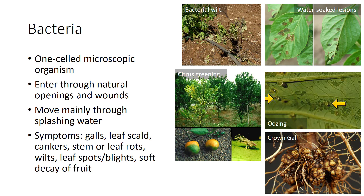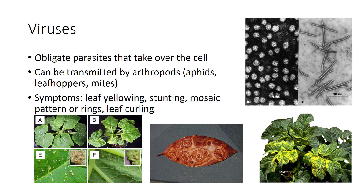Viruses typically consist of a core of DNA or RNA and a protein coat. Viruses are obligate parasites that get into the host cell and take over the machinery for producing viral DNA or RNA. They are microscopic organisms that can be transmitted by arthropods such as aphids, leafhoppers, and mites. After a plant is infected, the virus alters the plant's metabolism and is extremely difficult to treat. Common symptoms of a viral infection are leaf yellowing, stunting, mosaic patterns or rings, and leaf curling. The disease caused by the virus is named after the plant on which it was first studied. Viruses that affect horticultural crops include tobacco mosaic virus, tomato spotted wilt virus, tomato ring spot virus, and bean common mosaic virus.